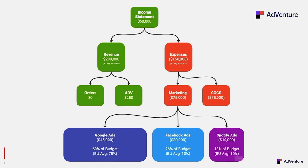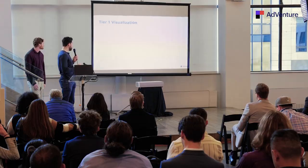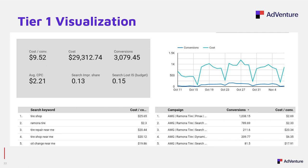Now let's dive into tiers of reporting. We see reporting in three tiers. Tier one is a basic report: it gives you what you want — cost per conversion of $950, almost $30,000 spent, 3,000 conversions, trends over time — but it doesn't really tell you why these things are happening.